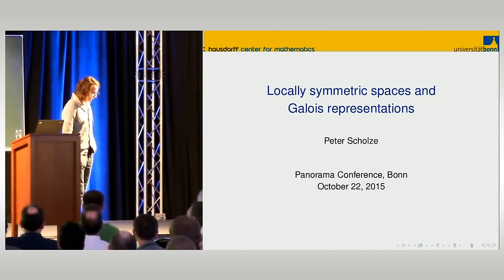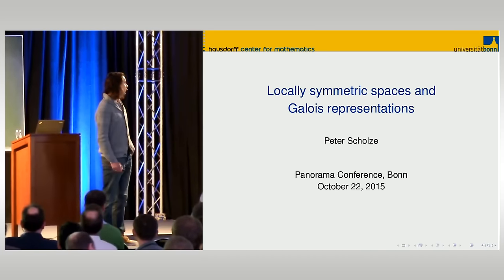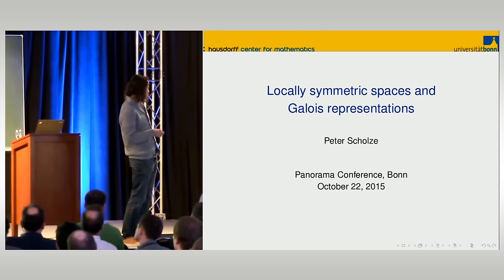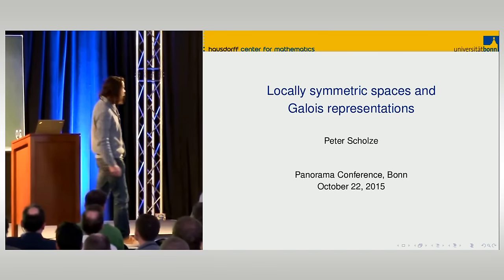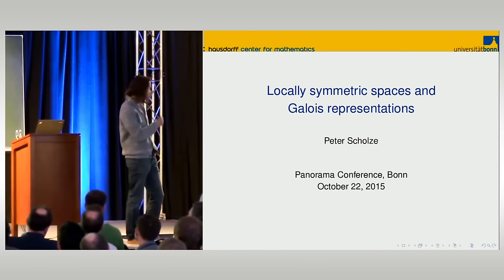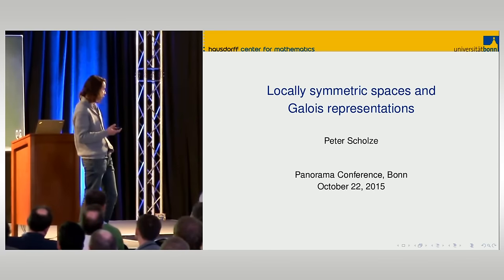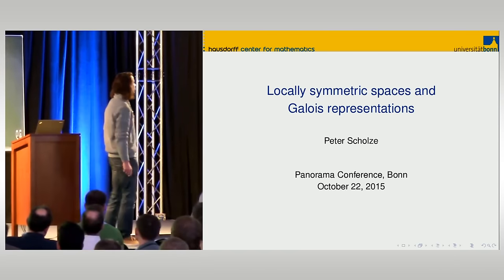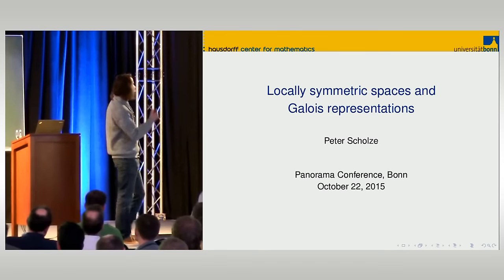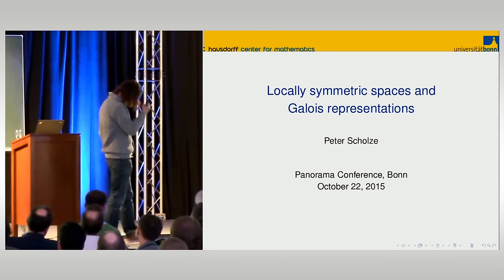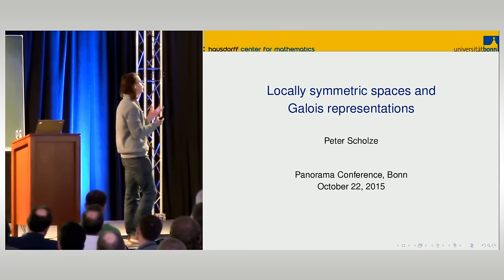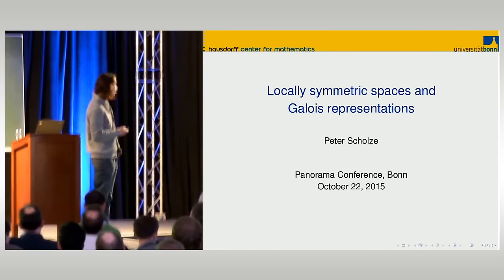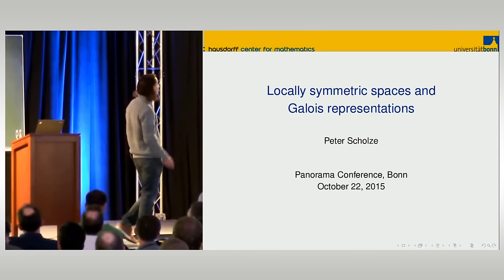Thanks a lot for the introduction. My talk will be about the relationship between two apparently quite different things: locally symmetric spaces and Galois representations. Those are two things linked by very strong conjectures. It fits into the realm of the Langlands program, and by now there are also some pretty general theorems. I want to explain some of the general features of those theorems in a very specific example which is representative of the general situation.